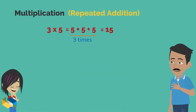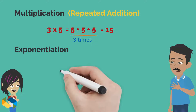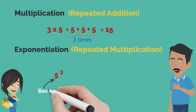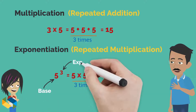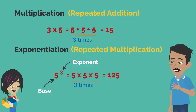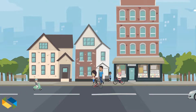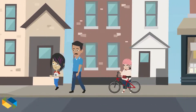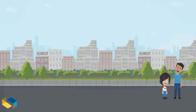How interesting! In a multiplication operation, say 3 times 5, you are basically doing repeated addition. In cases when you deal with an exponential operation, all you are doing is repeated multiplication of the base as many times as the power, or the exponent.